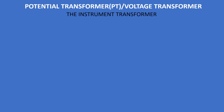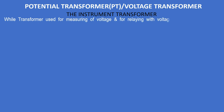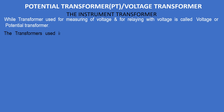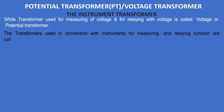A transformer used for measuring voltage and for relaying with voltage is called a voltage or potential transformer. The transformer used in connection with instruments for measuring and relaying functions are called instrument transformers. So a potential transformer is an instrument transformer.